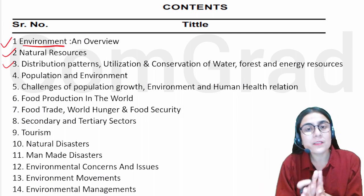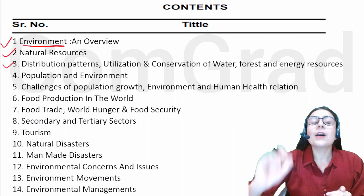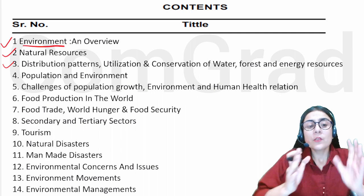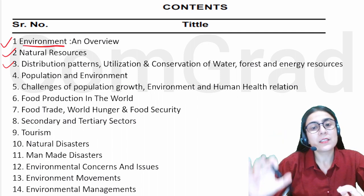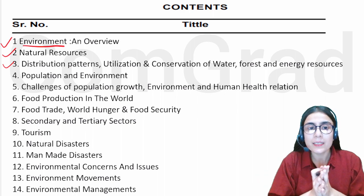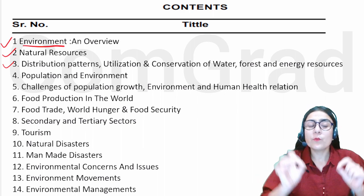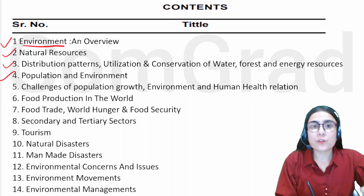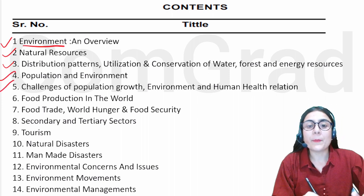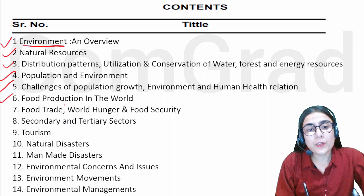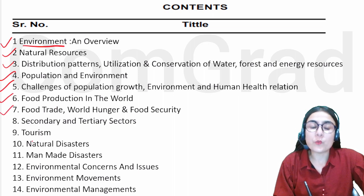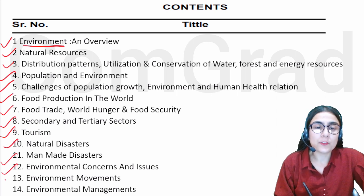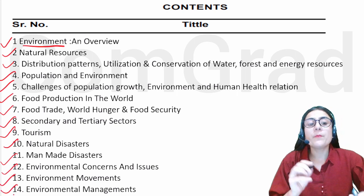This is a very simple subject. You are already studying the environment in a very small class — SST. So, the topics are familiar. Next: population and environment, challenges of population growth, environment and human health relation, food production in the world, food trade, world hunger and food security, secondary and dietary sector, tourism, natural disaster, man-made disaster, environmental concern and issues, environment movement, and environment management.